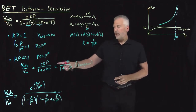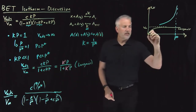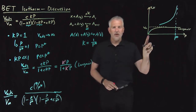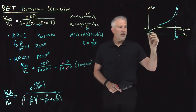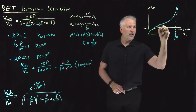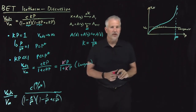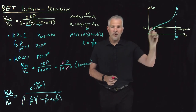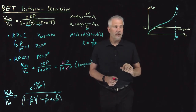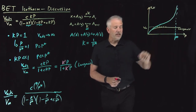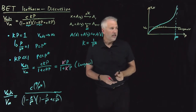So in the limit of low pressures, the BET model behaves exactly like the Langmuir model predicts. But at higher pressures, behavior diverges: adsorption can exceed one monolayer of coverage, and as we approach the vapor pressure, the model predicts condensation.